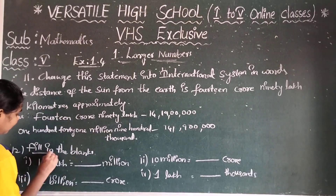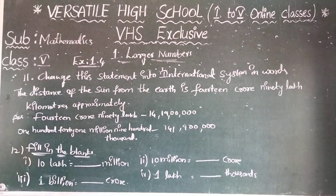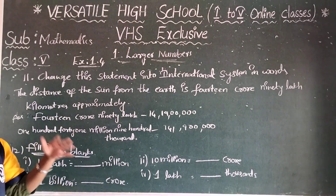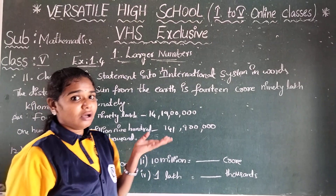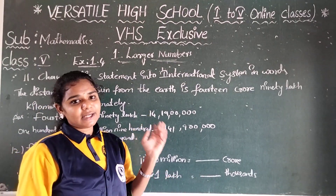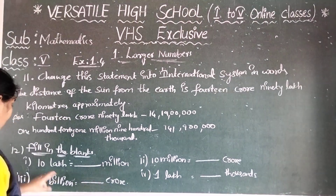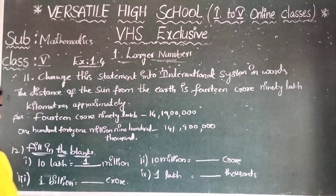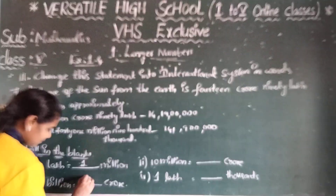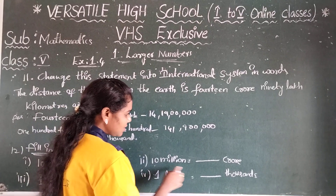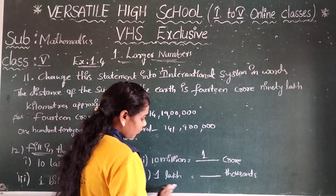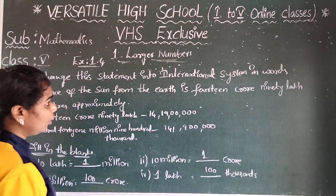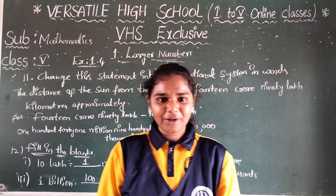Next, question twelve: fill in the blanks. 10 lakhs equals 1 million. 1 million equals how many crores? 100 crores. 10 million equals 1 crore. 1 lakh equals 100 thousands. This is today's class. Thank you. Have a nice day.